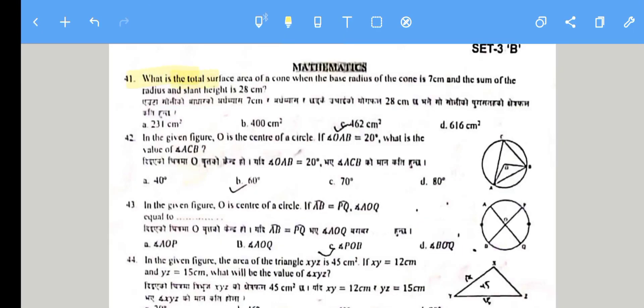Question 41: What is the total surface area of a cone when the radius of the base is 7 cm and the sum of the radius and slant height is 28 cm?